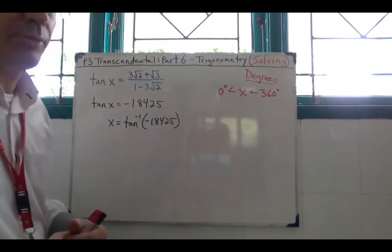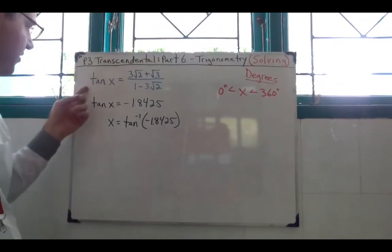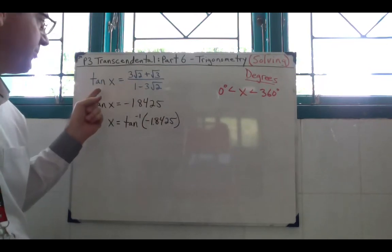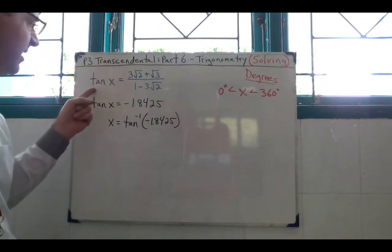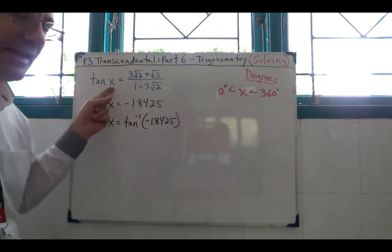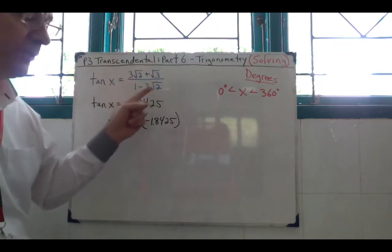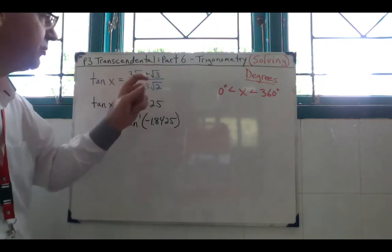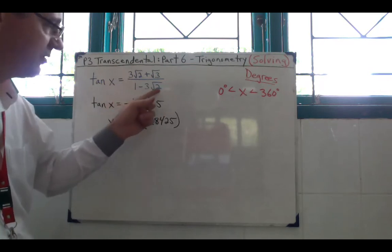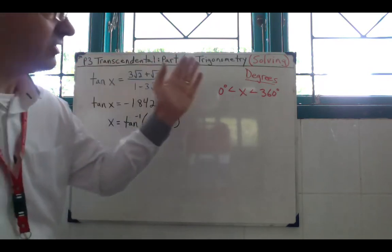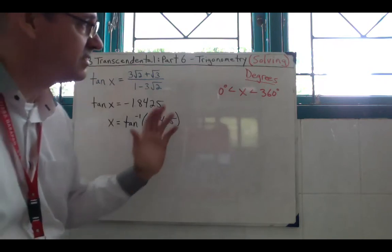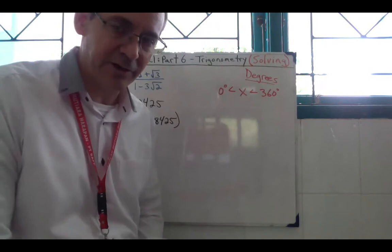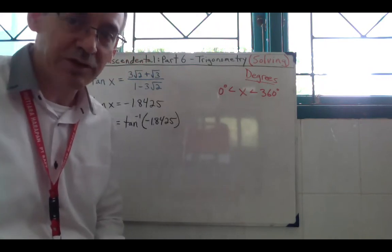I have it here on the board. This is where we left off. We showed that trigonometric expression written as tan x equals — and it was supposed to be an exact value, so we couldn't use a decimal — 3√2 + √3 divided by 1 − 3√2. It now wants us to solve this, and our domain is in degrees, so make sure your calculator mode is set to degrees.